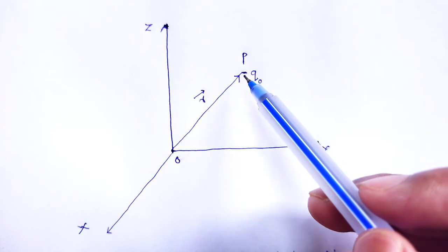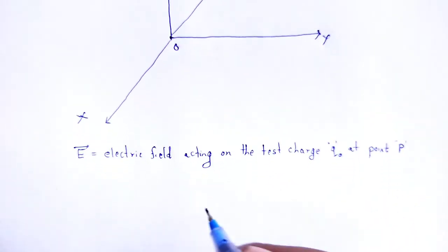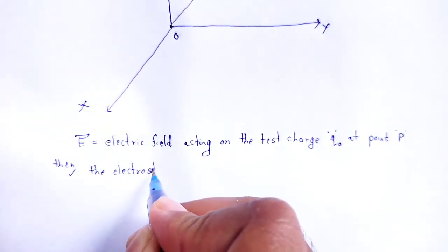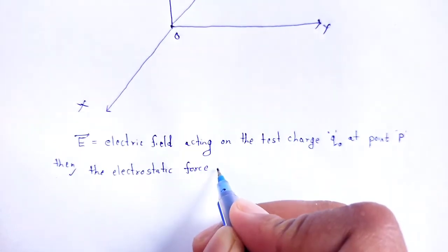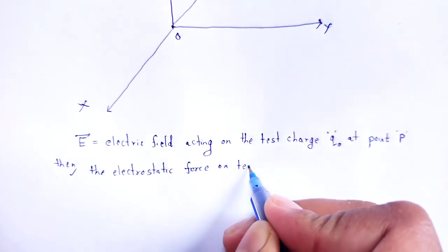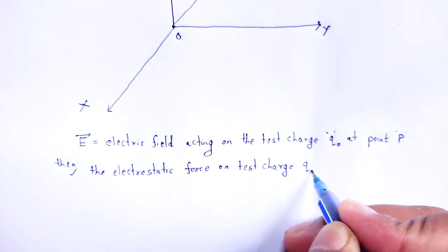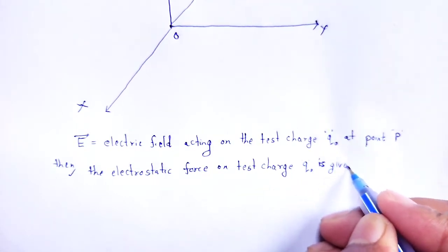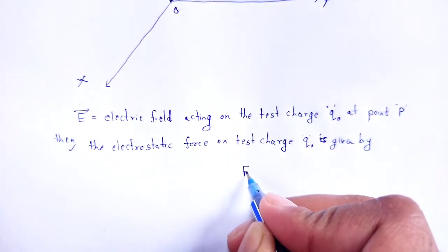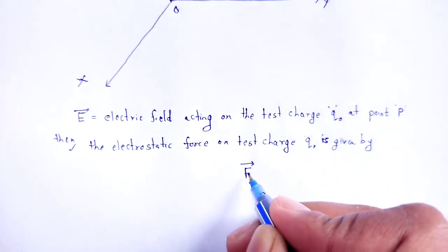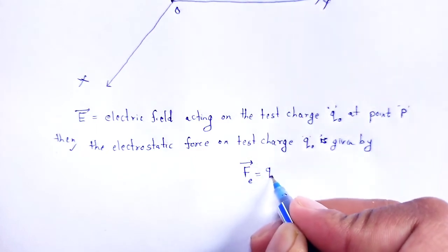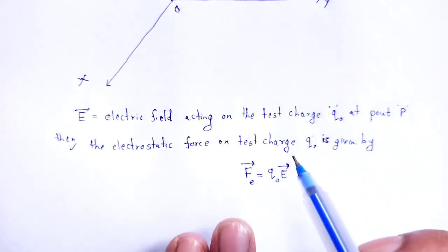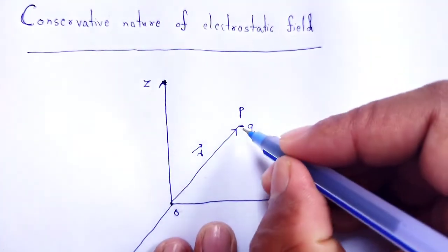Then the electrostatic force on that test charge q₀ is given by: electrostatic force fₑ is equal to q₀ into E — that is, charge into electric field.